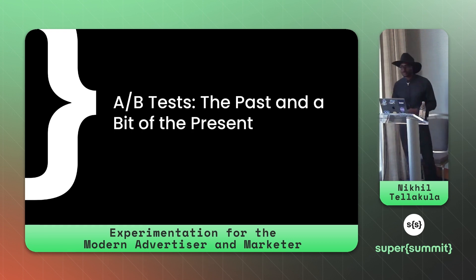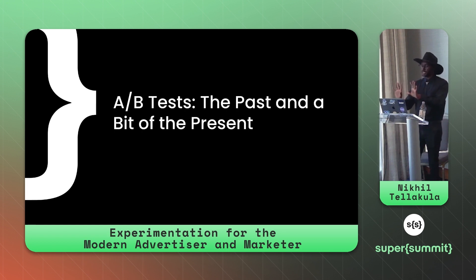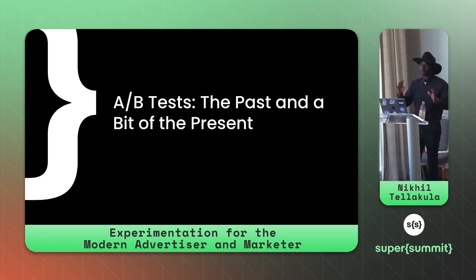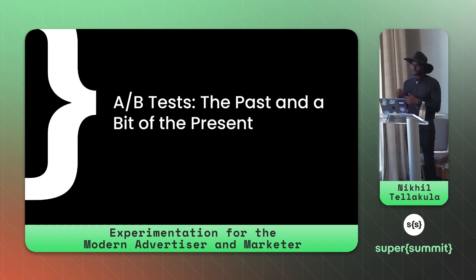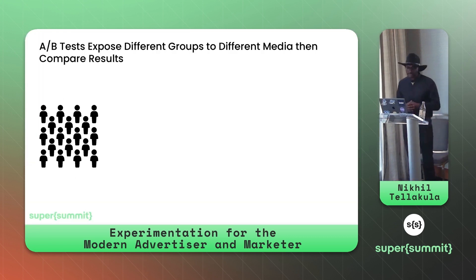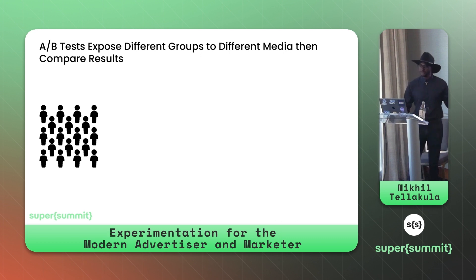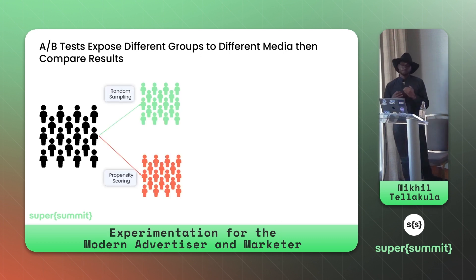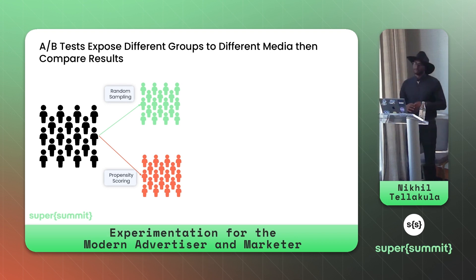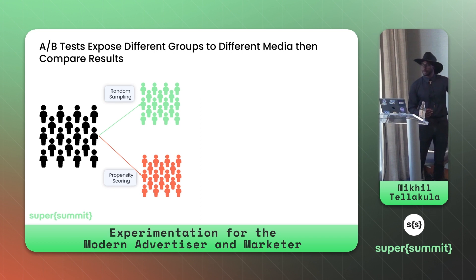The goal of the cleanroom is to create the A and B groups, which are pushed out to the client. Based on collaborative data, we create two balanced groups, then suppress ads, provide new ads, and test things as appropriate. Traditionally, A/B tests expose different groups to different media and compare results. The population is split in various ways — algorithmically with propensity scoring to find like-minded individuals, or via random sampling as in randomized control trials.